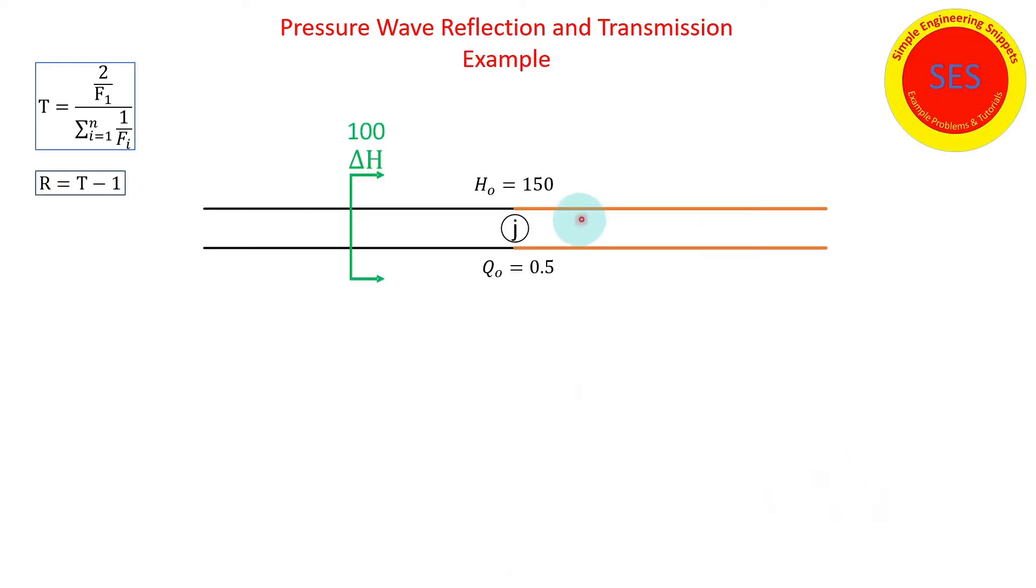Then we worked through an example. This is a two pipe junction, which doesn't sound like a junction but it is, because in this example the elastic factor in pipe one is 500 and the elastic factor in pipe two is 400.